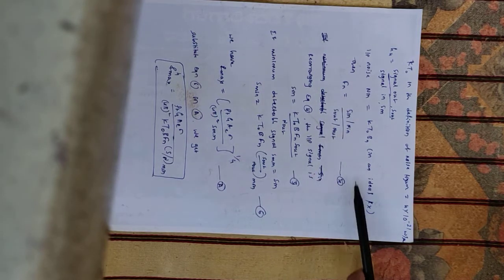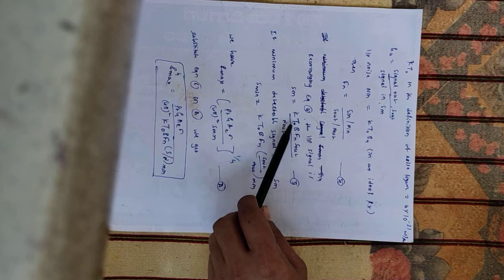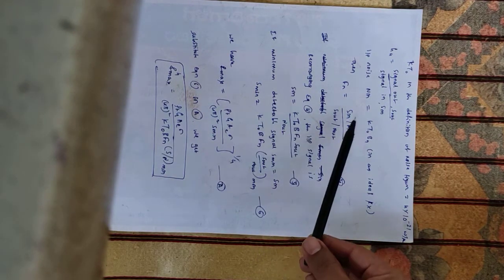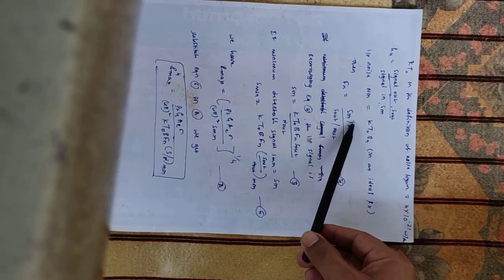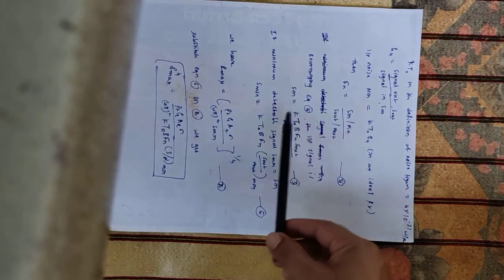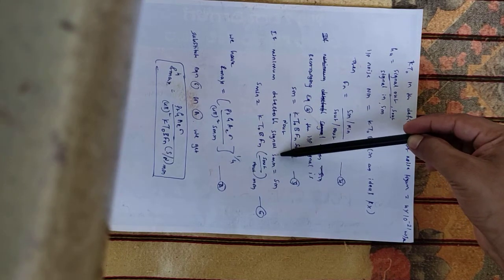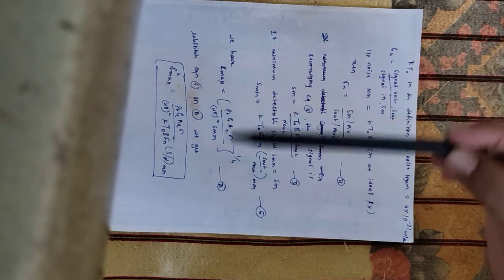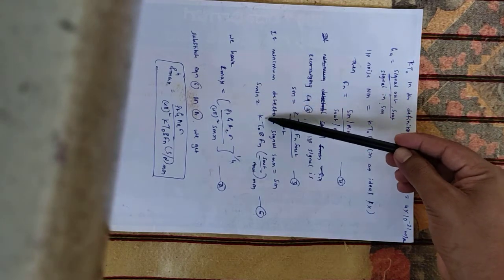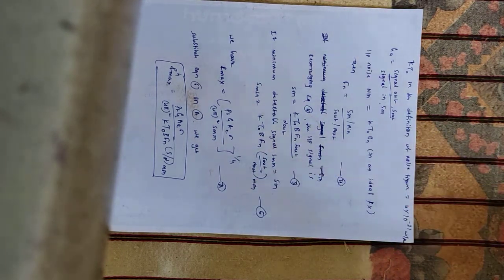Rearranging this expression for Sin, I get Sin = kT0·B·Fn · (Sout/Nout). What I have done here is substituted the value of Nin = kT0·Bn and rearranged the equation for Sin. So if the minimum detectable signal is Smin, which equals Sin, then substituting gives: Smin = kT0·B·Fn · (S/N)min.